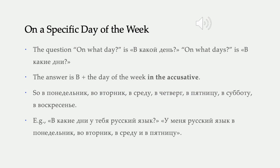So you could say, for example: В какие дни у тебя русский язык? On what days do you have Russian? Notice that when we say В before a voiceless consonant like К, it becomes Ф. У меня русский язык в понедельник, во вторник, в среду и в пятницу. I have Russian on Monday, Tuesday, Wednesday, and Friday.